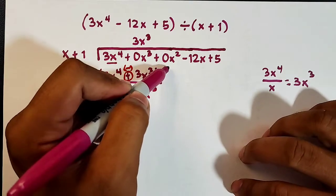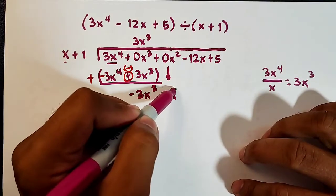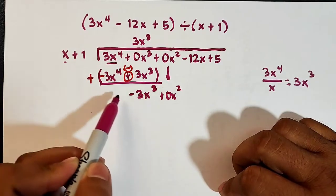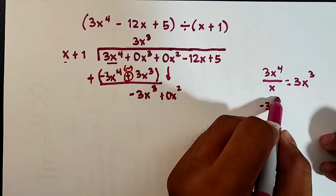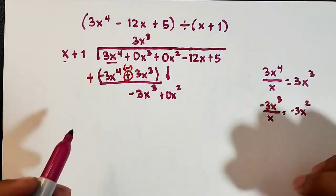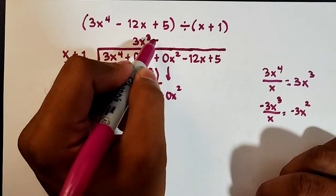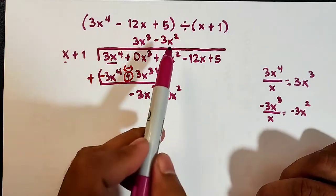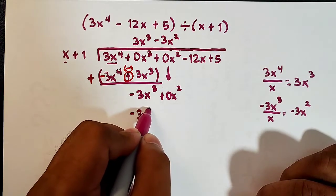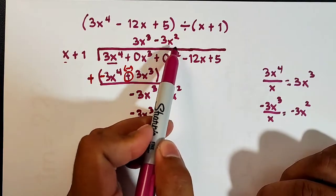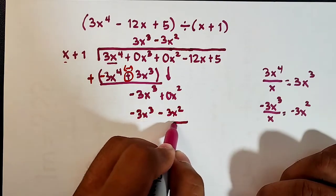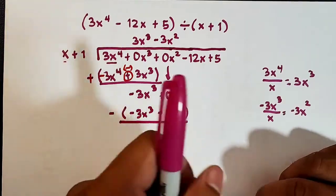Bring down plus 0x squared. Now divide the new leading term: negative 3x cubed divided by x equals negative 3x squared. We put it above 0x squared, so that is minus 3x squared. After dividing, multiply: negative 3x squared times x is negative 3x cubed; negative 3x squared times 1 is negative 3x squared. Then subtract and enclose in parentheses.